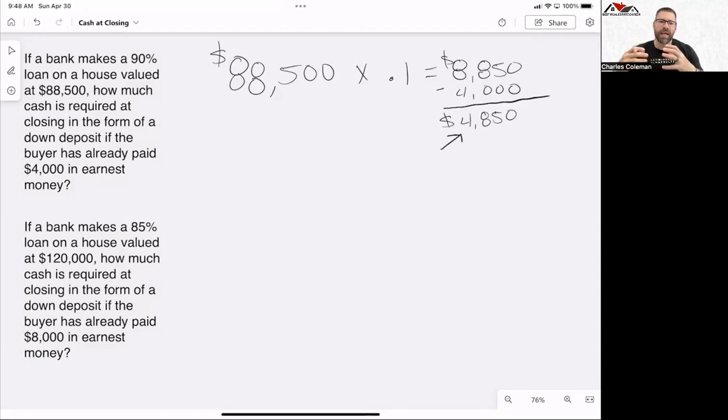If a bank makes an 85% loan on a house valued at $120,000, how much cash is required at closing in the form of a down deposit if the buyer has already paid $8,000 in earnest money? So we're going to look at this the exact same way. We have a purchase price of $120,000.